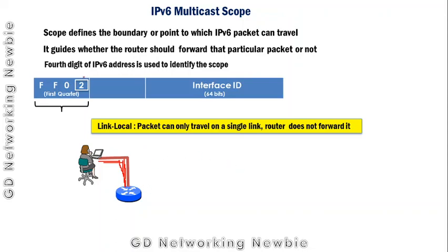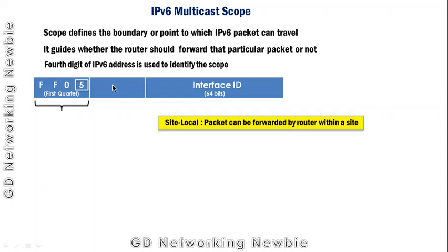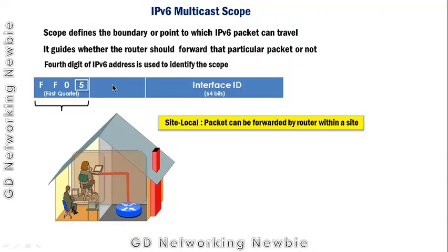When the fourth digit is 5, the scope is site-local. Site-local means, for example within a building, we can have multiple users, computers, and even routers, but those packets must remain within that site. Packets can be forwarded by routers but must stay within a defined site boundary, which can be a single building, multiple buildings, or a single office — defined through configuration.